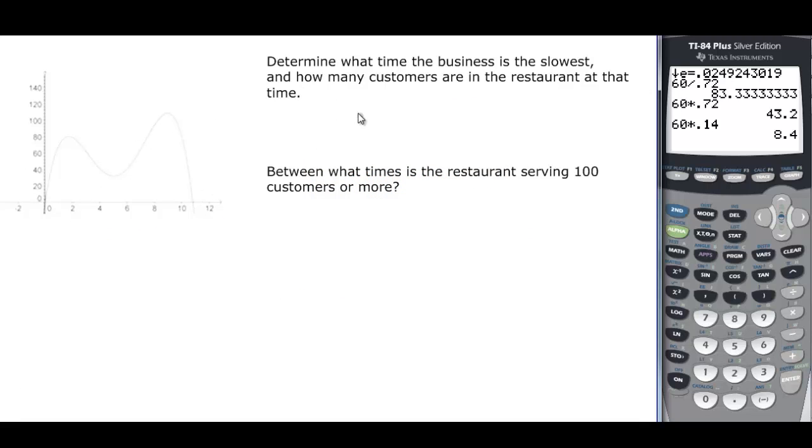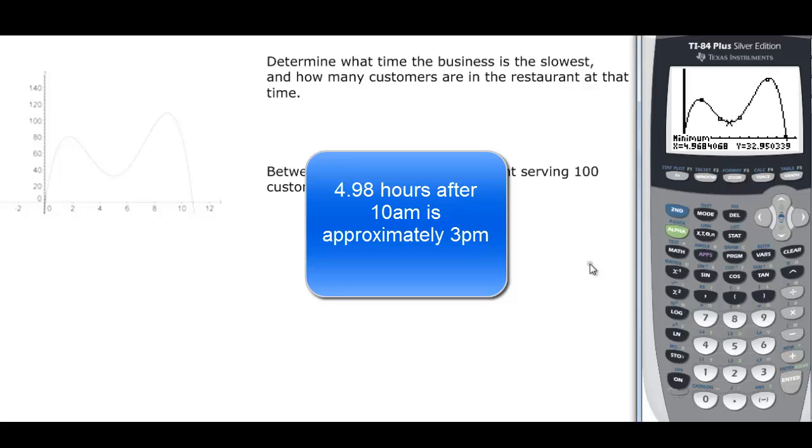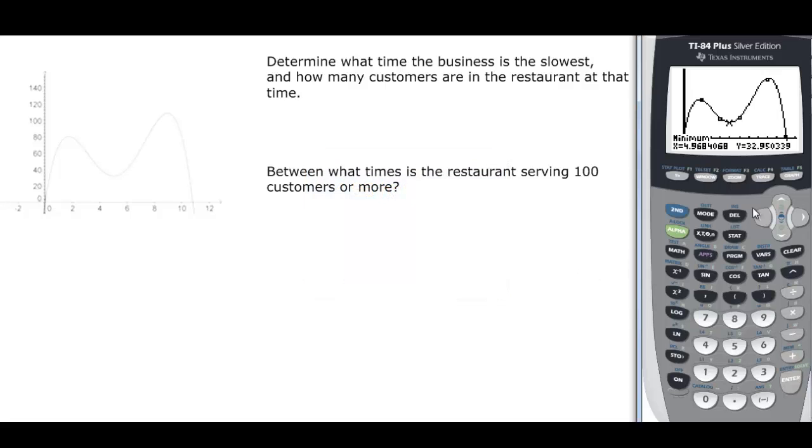Then I give you the graph so that we can not have to necessarily work with the calculator, although we can. What time is the business the slowest? That's going to be this point down here. We better go to my graph, second trace, we want the minimum this time. Come back and go to the left of that minimum and enter, and go to the right of that minimum and enter, and then enter for the guess. We find out that that is 4.98, so we could do 4.98 or we could just round it approximately 5 hours, which translates to 3 p.m. Then we want to know how many customers there are. That would be 32.9, so let's please call that 33.